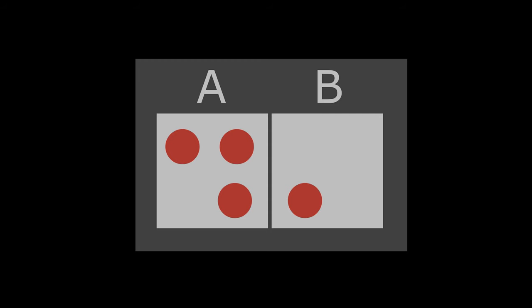Let's take a small example. There are two particles in subsystem A and the other two particles are in subsystem B. This is one possible microstate of the system. Another possible microstate is when all particles are in subsystem A and none at all in subsystem B. A microstate is therefore a possible arrangement of the particles.